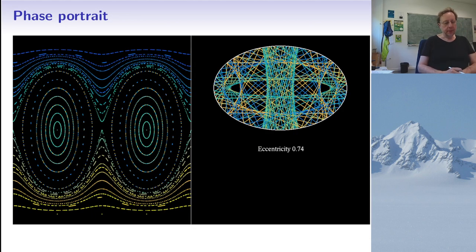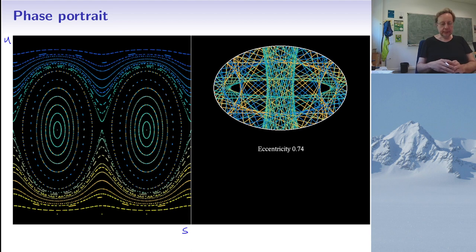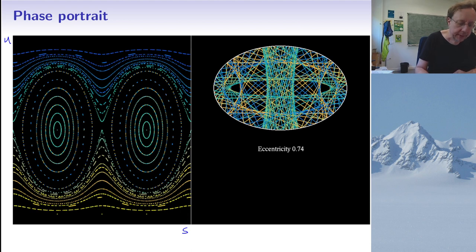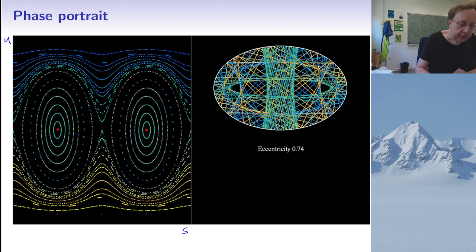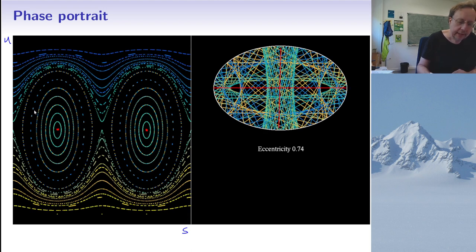Let's look at some trajectories and orbits of a billiard in an ellipse. On the left half I have orbits with s on the x-axis and u on the y-axis; on the right half you see the corresponding color-coded trajectories. There is an orbit of period two bouncing back and forth along the minor axis, and another orbit of period two bouncing along the major axis.